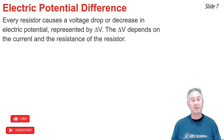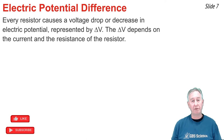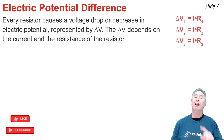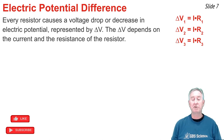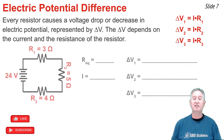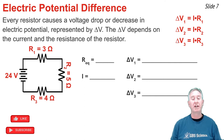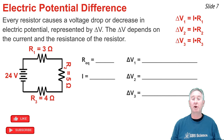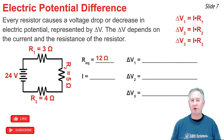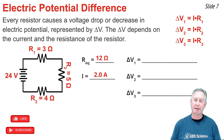Every resistor in a series circuit causes a voltage drop, or a decrease in electric potential, represented by the symbol delta V. The value of delta V depends on two variables: the current in the circuit and the resistance of that resistor, using the formula delta V equals I times R. Consider a 24-volt power source with three resistors — a 3-ohm, a 5-ohm, and a 4-ohm. To calculate voltage drops, I first calculate the equivalent resistance by adding 3 ohms, 5 ohms, and 4 ohms to get 12 ohms, then calculate the current as 24 divided by 12, giving 2 amps.